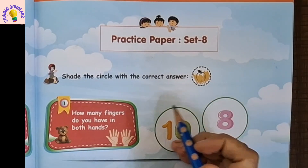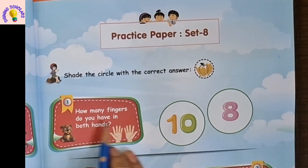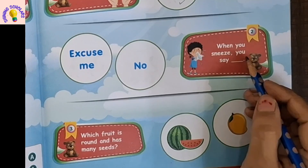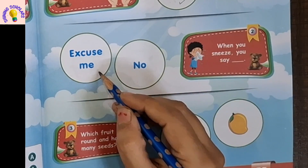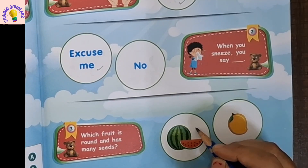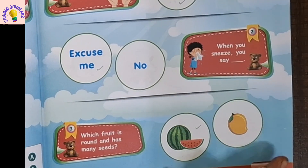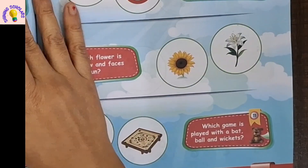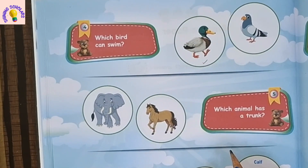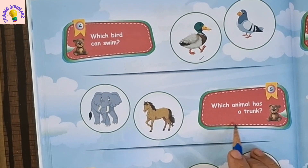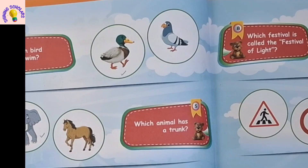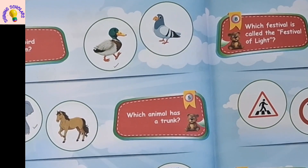Next sample paper is set 8. How many fingers do you have in both hands? This is ten. When we sneeze, you say excuse me. Which fruit is round and has many seeds? This is a watermelon — it has a round shape and many seeds. Which bird can swim? This duck can swim, not pigeon — pigeon flies. Which animal has a trunk? Elephant has a trunk. A baby lion is called a cub.